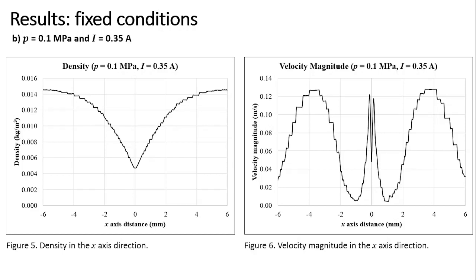This was confirmed by the velocity magnitude plot in Figure 6, which shows a symmetric shape about the 0 mm point, as expected from a low current arc-type discharge.